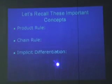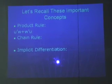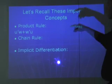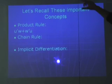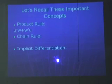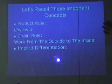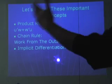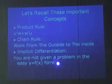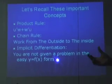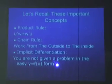Let's recall some important concepts. I'm not going to go into detail since my group is covering that. The product rule is the derivative of the first times the second regular, plus the derivative of the second times the regular first. The chain rule: you work from the outside to the inside. Implicit differentiation is when you're not given an easy problem in the form y equals f(x) — you have to work with the problem and find y prime by making changes to both sides.